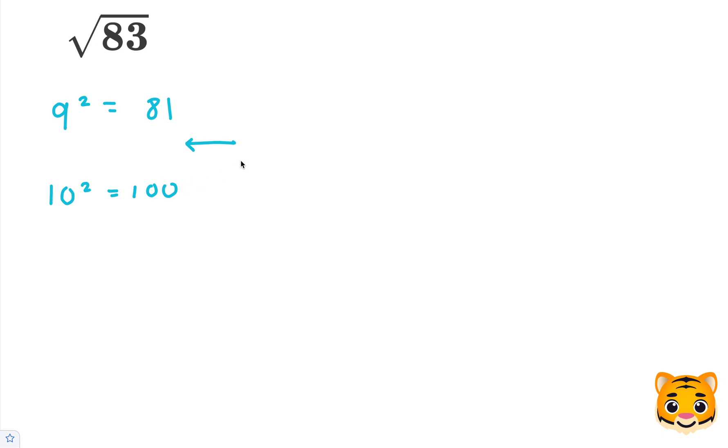83 lies between 81 and 100. So we can write the following inequality. The square root of 81 is less than the square root of 83, which is less than the square root of 100. And this is true because 81 is less than 83, which is less than 100.